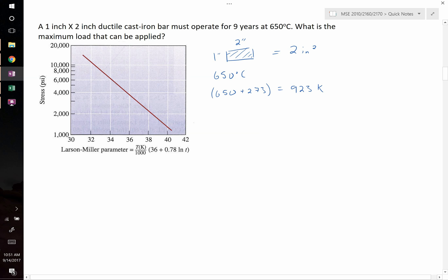Now that we have the temperature, the last thing we need to do is turn nine years into hours. Nine years times 365 days per year times 24 hours per day gives us 78,840 hours.